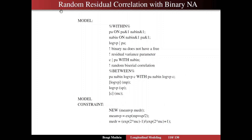Now, what about adding some random effects for this binary negative affect variable? Let's add random residual variances and a random correlation. We have the same expression as before for both PA and NABIN, and we have log V for PA as the random residual variance. Now, the binary NA does not have a free residual variance parameter — that's a piece of information we lose when we dichotomize — so we don't have any log V for the binary.